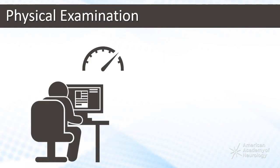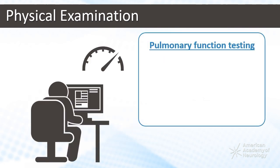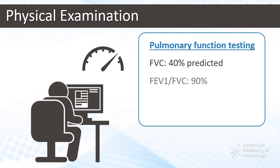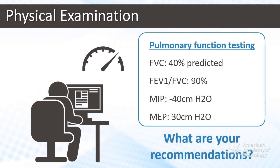Reviewing her chart, you notice she recently underwent pulmonary function testing. Here are the results: forced vital capacity is 40% predicted; FEV1 over FVC, 90%; maximum inspiratory pressure, negative 40 cm of H2O; maximum expiratory pressure, 30 cm of H2O. What are your recommendations?